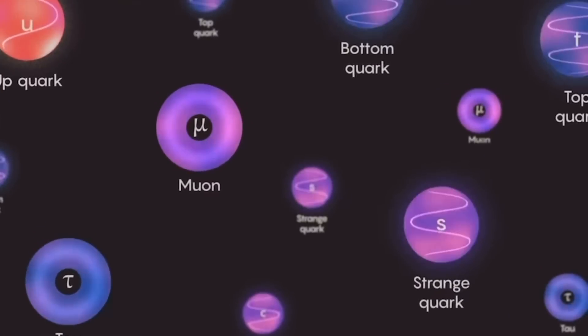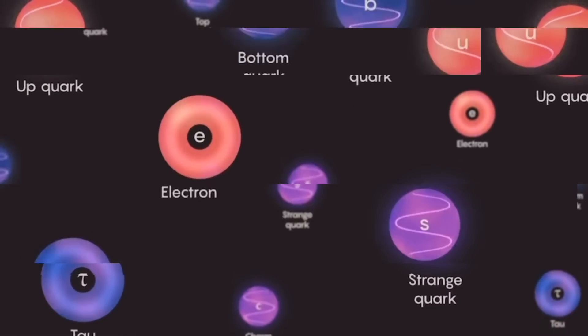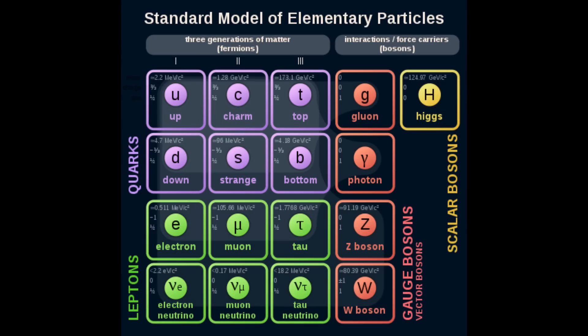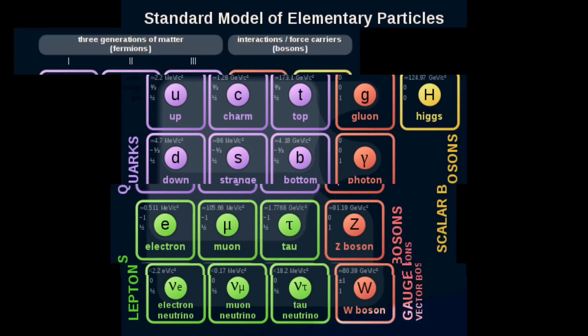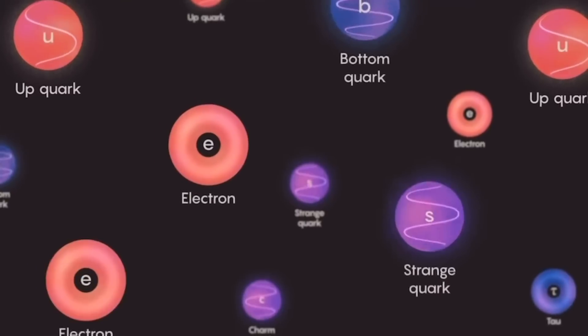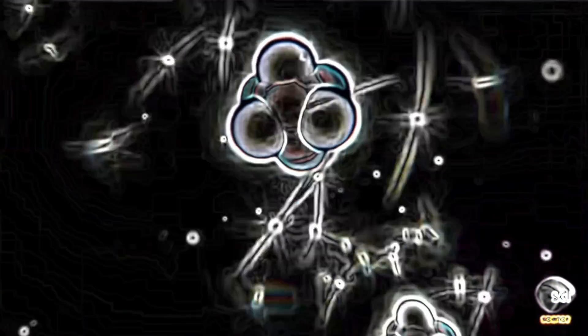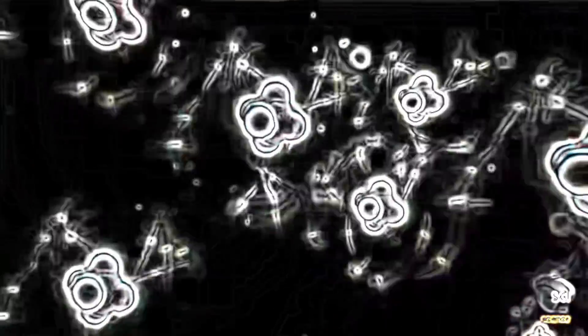Most believe these particles — quarks and leptons — are the fundamental building blocks of everything we know. Some theorists suggest even these elementary specks are composed of tiny, vibrating strings. In any case, observations show that these bits of matter are in constant motion, and what's crazier is their movements seem to be completely random.